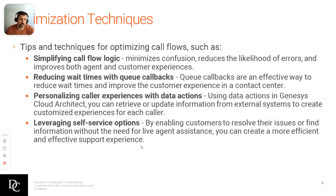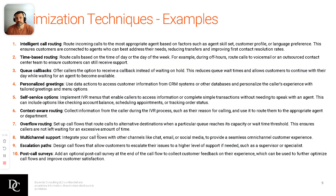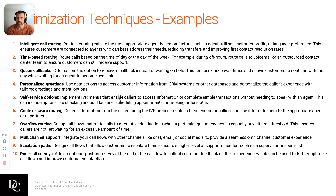That leads right into self-service options. If you're able to pull back all that information, use them by name, and have all the information up front, it enables self-service options to run much smoother, helps resolve their issues and find information without the need for a live agent, and creates a more efficient and effective support experience. Intelligent call routing routes incoming calls to the most appropriate agent based on factors such as agent skill set, customer profile, and language preference — for example, offering Spanish routing to Spanish-speaking agents.